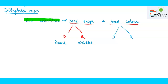Seed color was also available in contrasting traits — one dominant and one recessive. The dominant seed color was yellow and the recessive seed color was green. For the genotype, you will write capital R capital R for the dominant round trait.